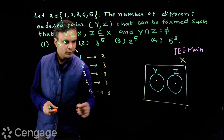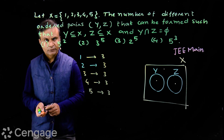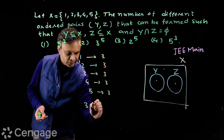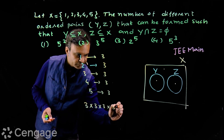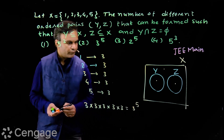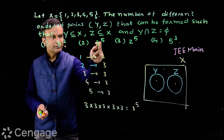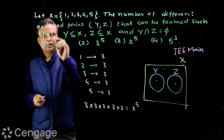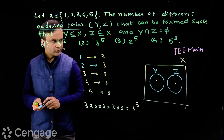So the total number of options is 3 × 3 × 3 × 3 × 3, which is 3 to the power 5. So the total number of ordered pairs is 3 power 5. Here, the word 'ordered pairs' is important.